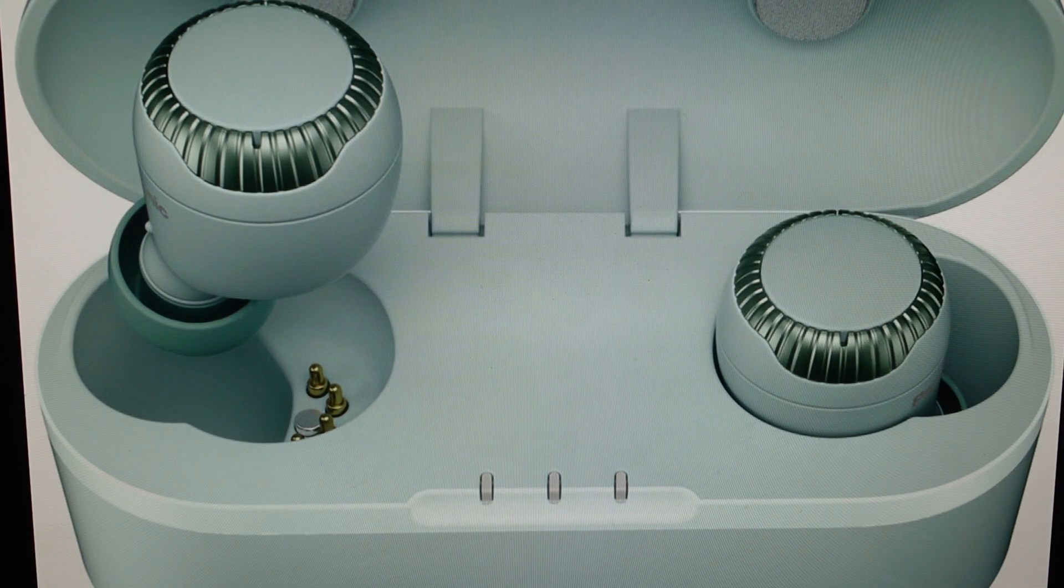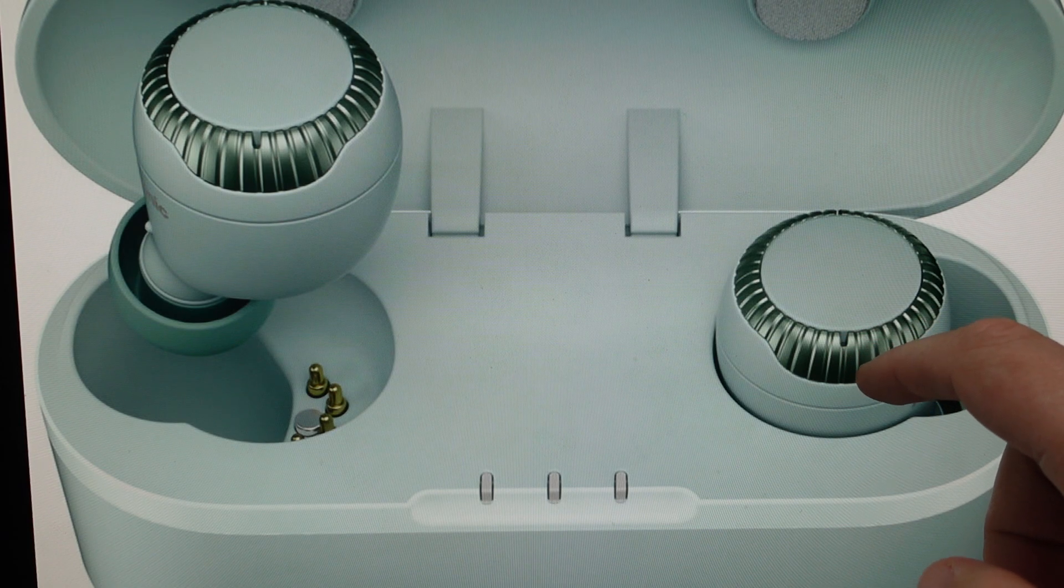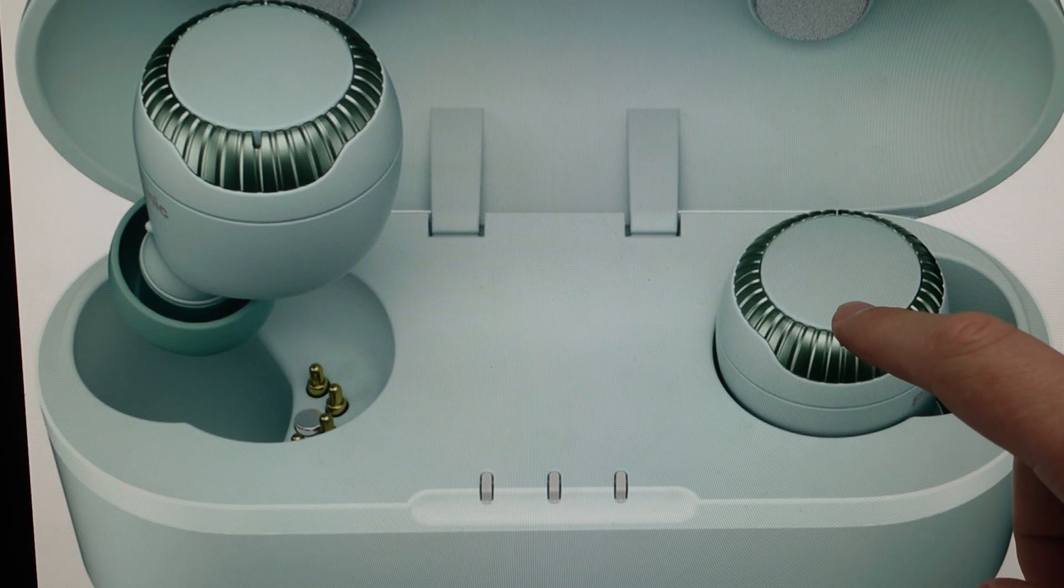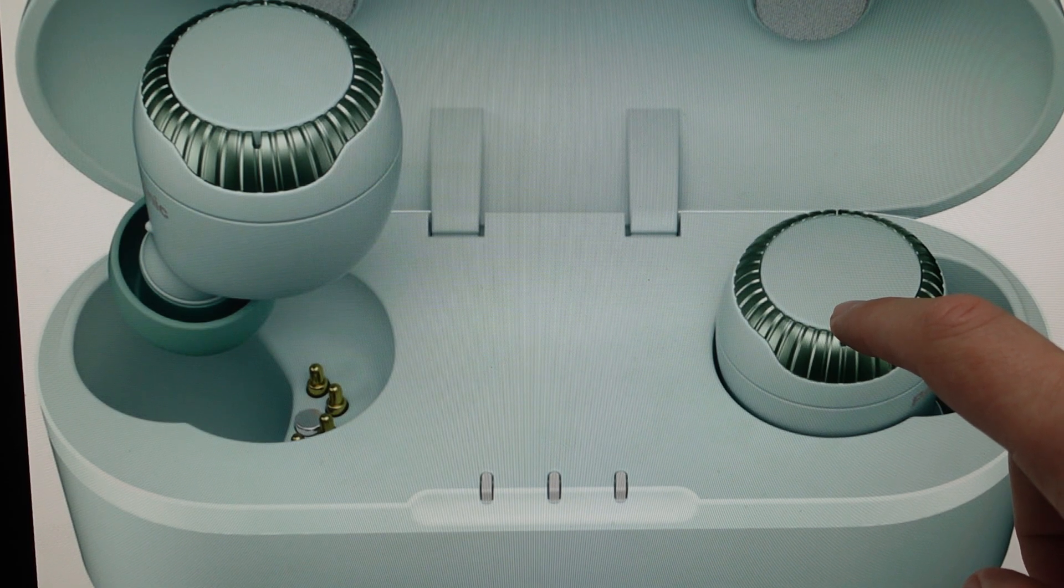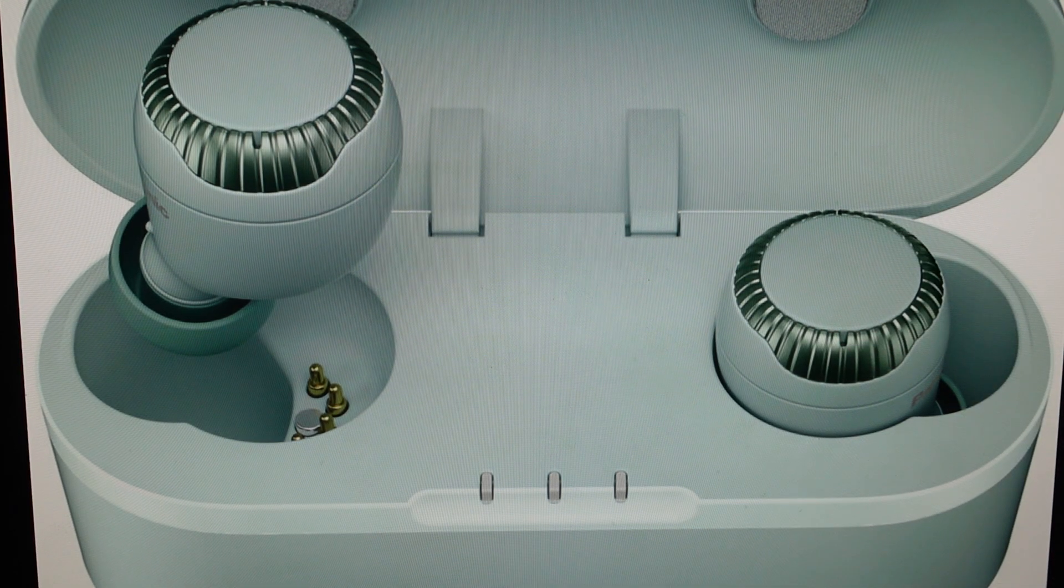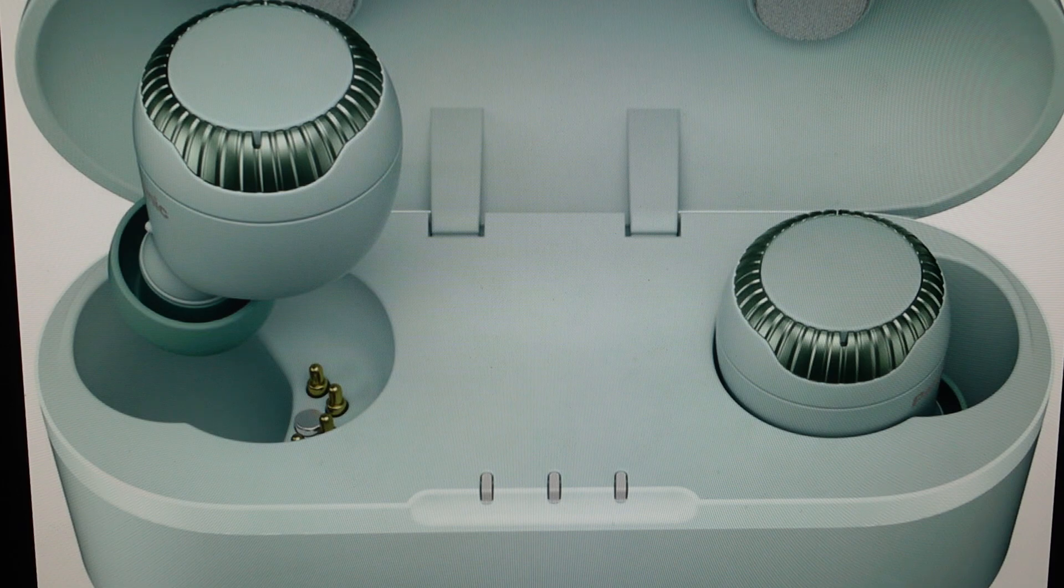Take the right earbud out and while the earphone LED is blue, we're just going to touch and hold the sensor on it for about seven seconds. The earphone LED will alternate blue, red, blue, red, blue, red, going into pairing mode basically, search mode.